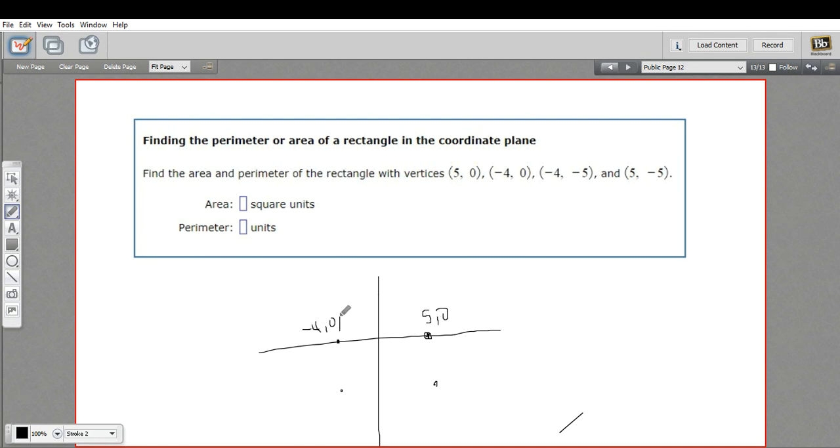So this is a distance then, or a length of 9. And then we're at 5, 0 up here and 5, negative 5 down here. So this is a distance of 5. So we've got a rectangle that is 9 by 5.